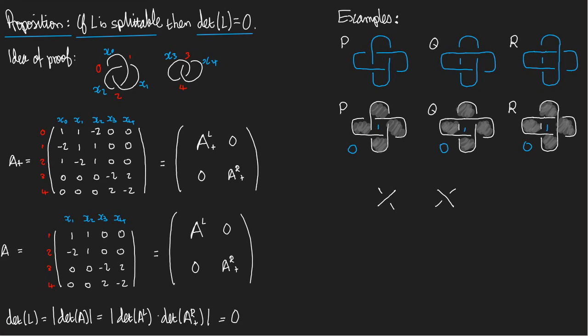At every crossing in my chessboarded diagram, there's one of two situations that happens. Either my overstrand is clockwise from a shaded region, as in the first case, or my overstrand is anticlockwise from a shaded region. In the first case, we give the crossing a sign plus one. In the second, we give it a sign minus one.